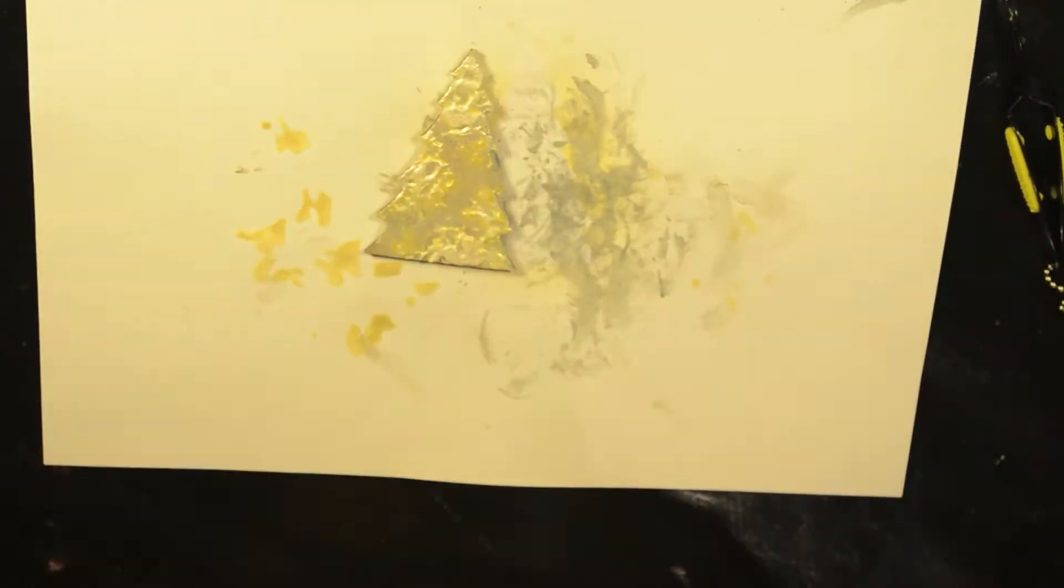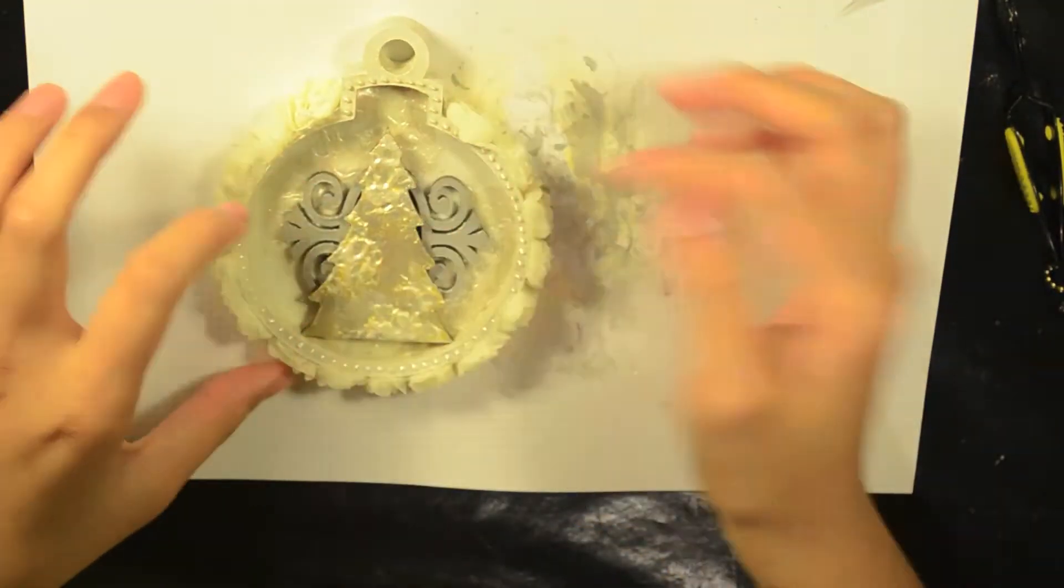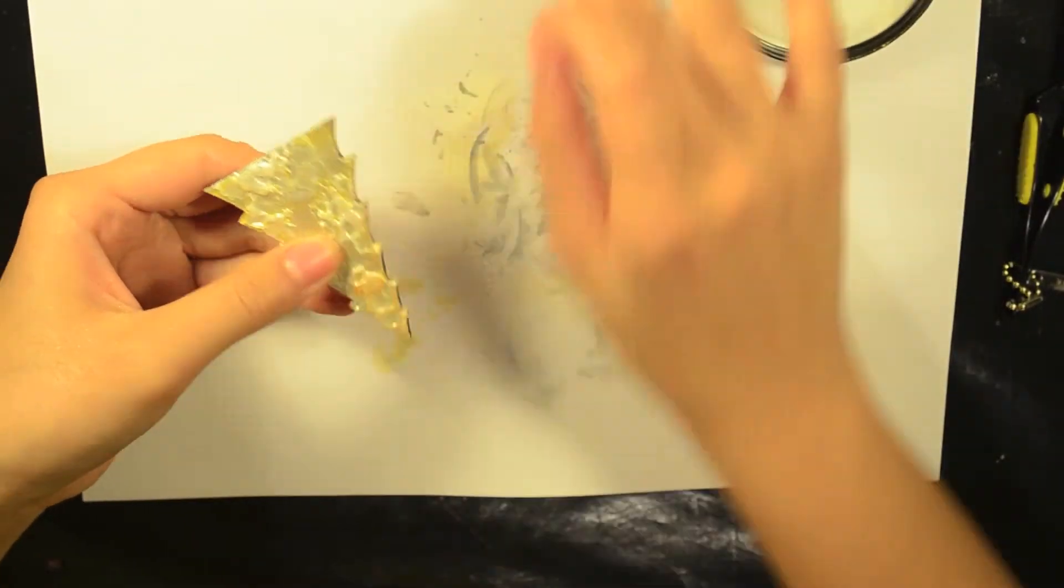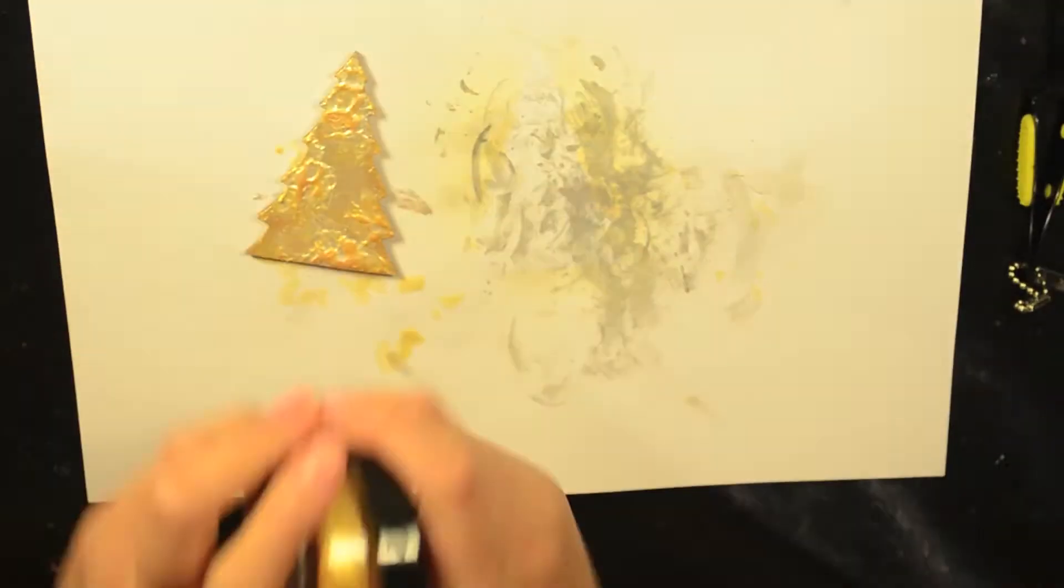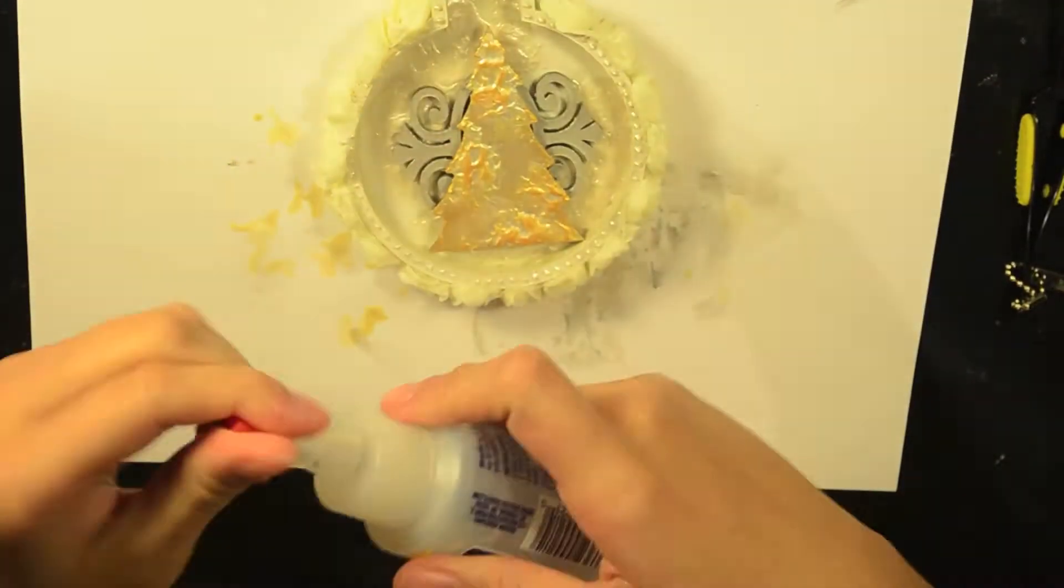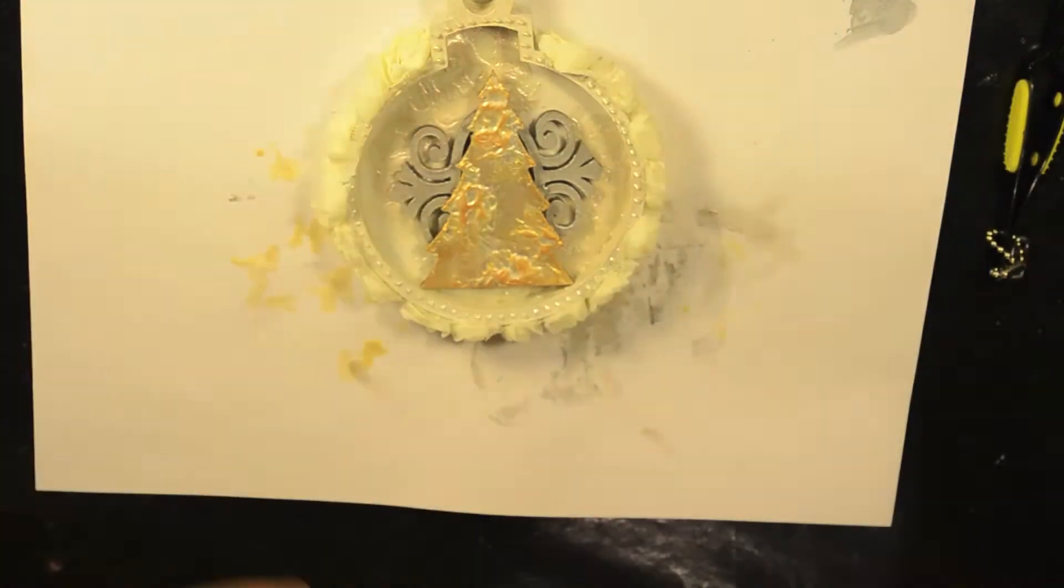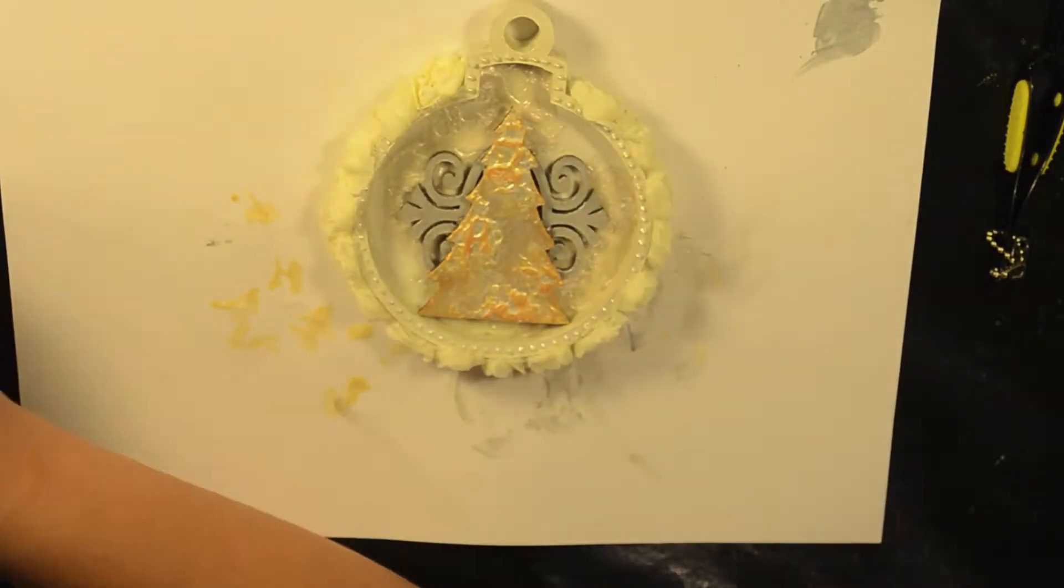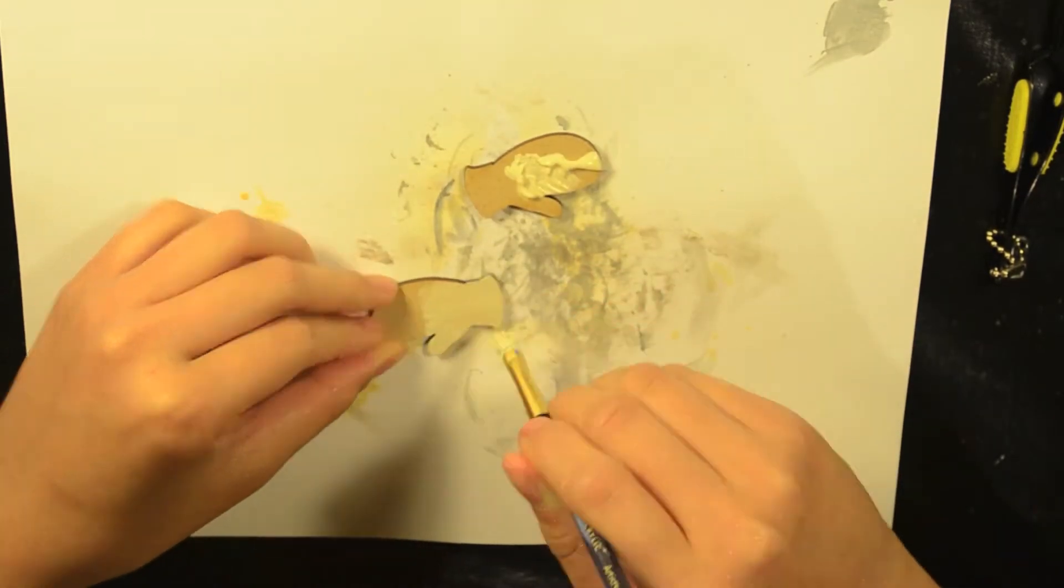Now I go over it with some Viva Decor modeling cream, which is like a glimmer and texture paste, then dry it and bubble it up. I use my Inka Gold in gold color to rub over the raised or textured parts to make them more defined. I was going to make them look like snow, but then I decided to make it gold color instead. Sometimes I change my mind.